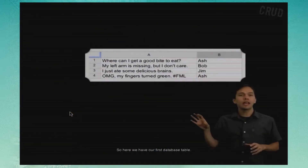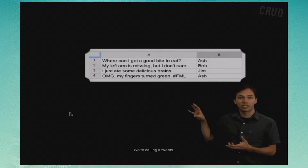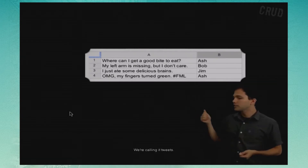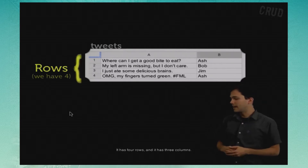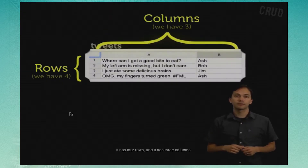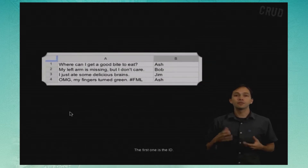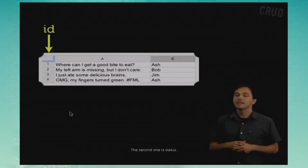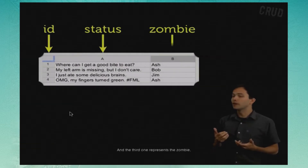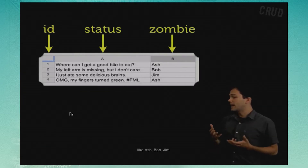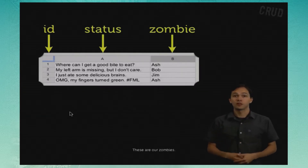Here we have our first database table — it kind of looks like a spreadsheet. We're calling it Tweets. It has four rows and three columns. We might put a label on each of these columns: the first one is the ID, the second one is status, and the third one represents the zombie — like Ash, Bob, Jim. These are our zombies.